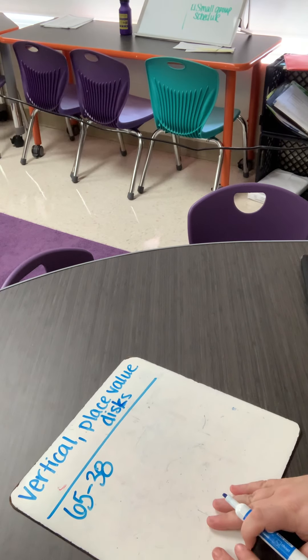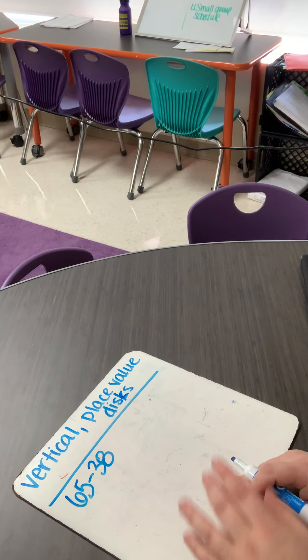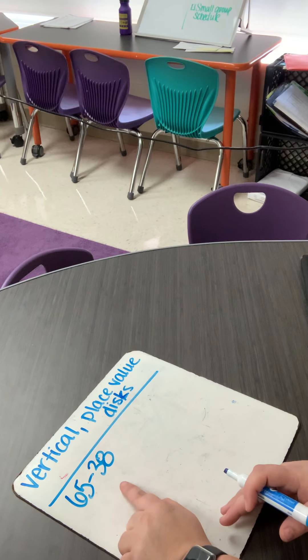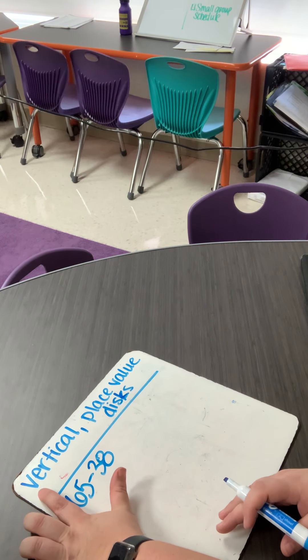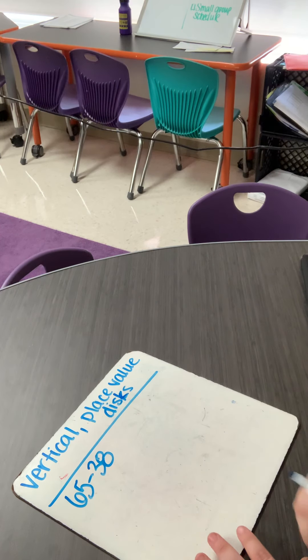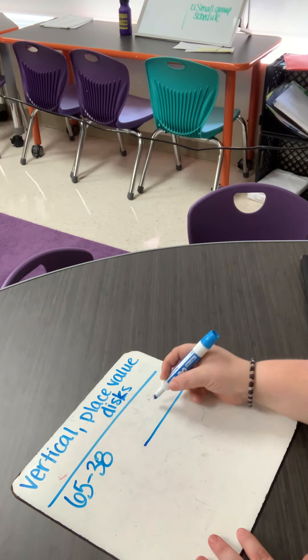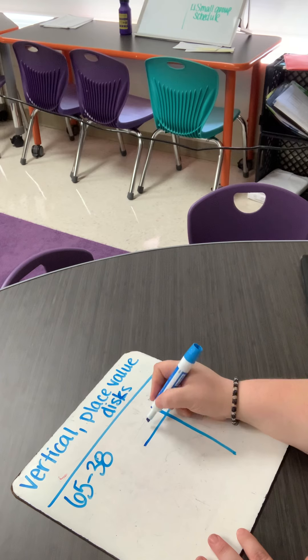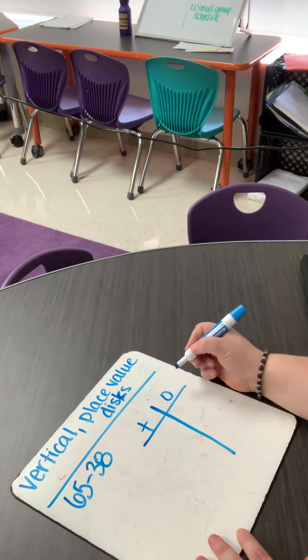All right, my friends. So now what we're going to do is subtract using the vertical written method and using place value disks. The very first thing I'm going to do is make my place value over here. Here's my tens. Here's my ones.